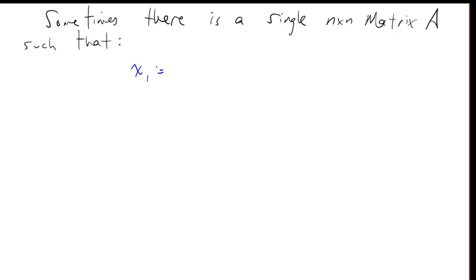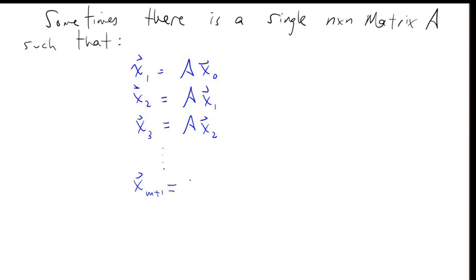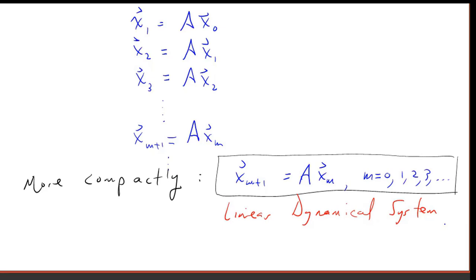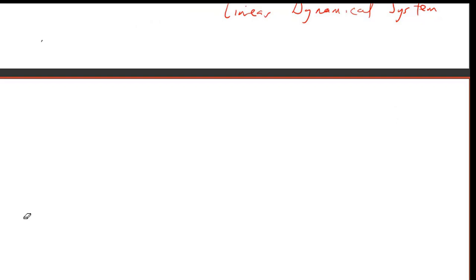Sometimes there is a single n-by-n matrix A such that x_1 = A·x_0, x_2 = A·x_1, x_3 = A·x_2, and so forth. So in general, x_{m+1} = A·x_m, where m ranges from 0, 1, 2, 3, and up. This defines our linear dynamical system.